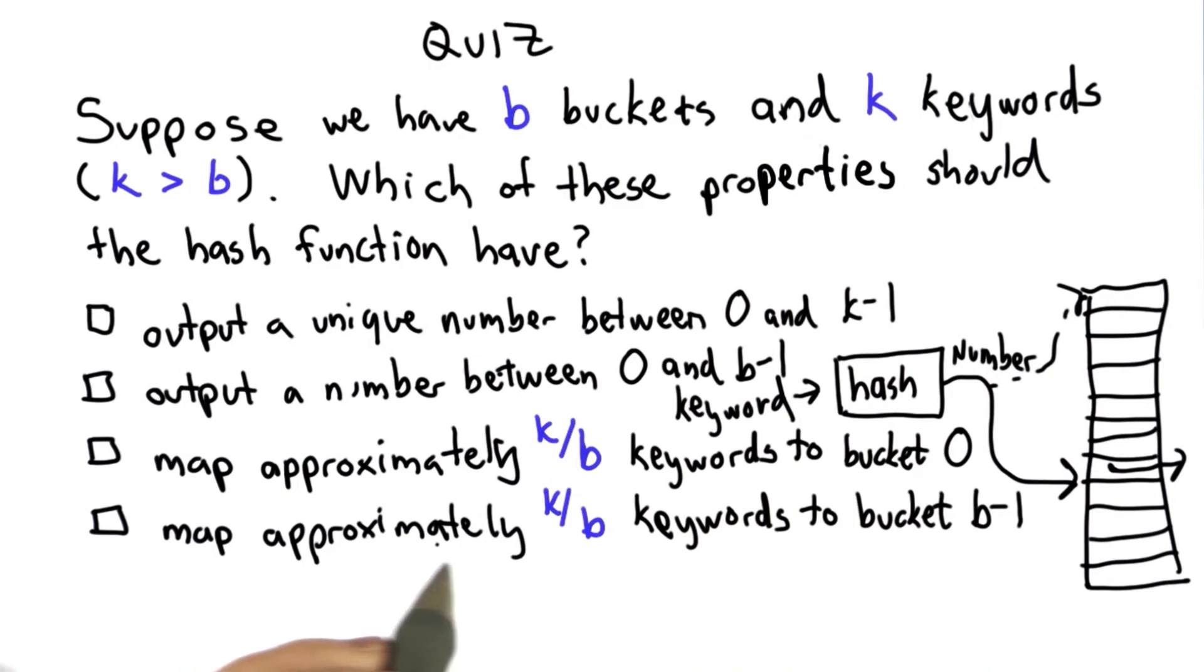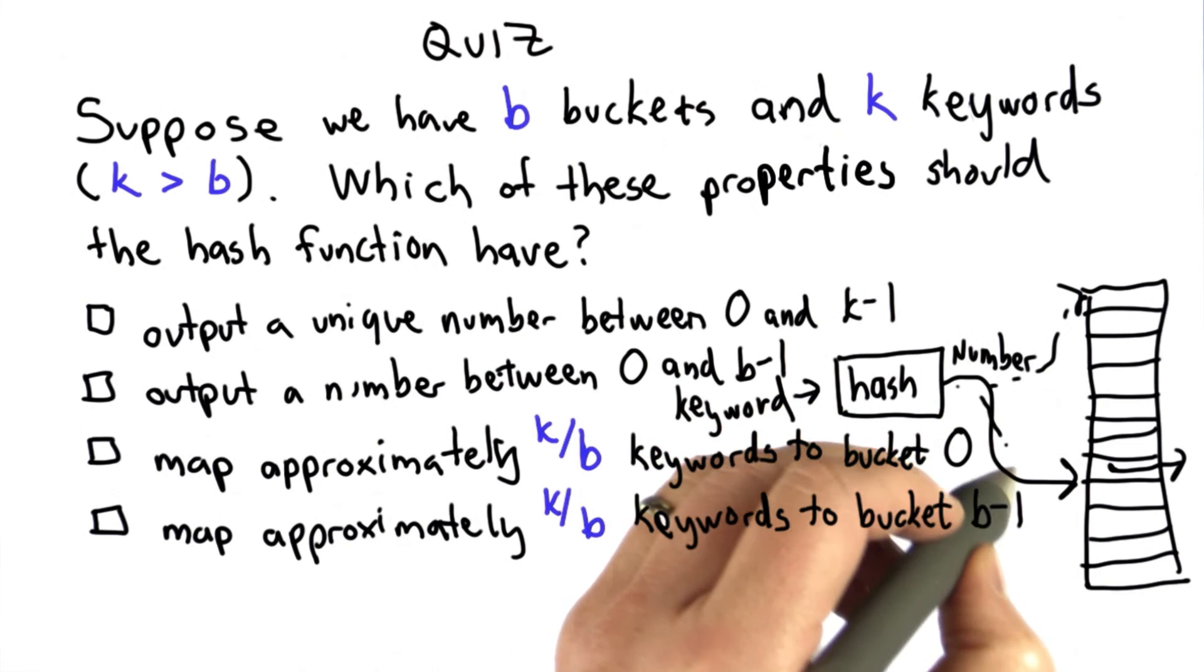So the fourth choice is map approximately k divided by b of the keywords to bucket b-1, that's the last bucket.